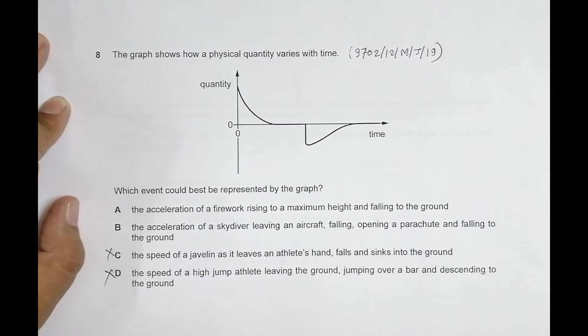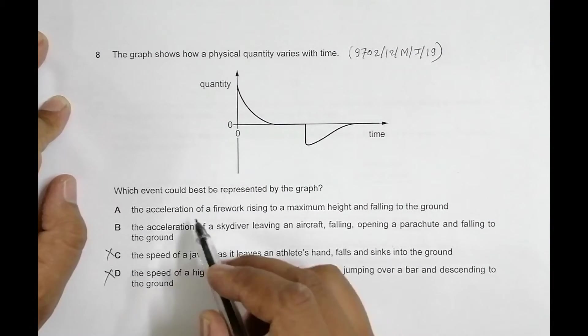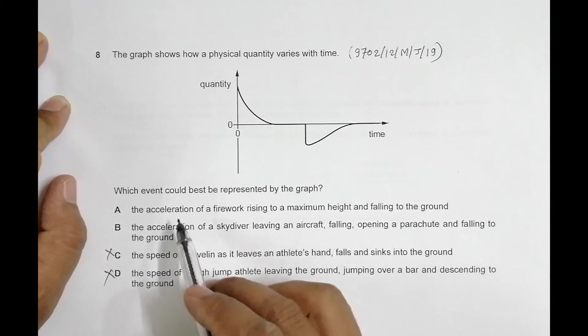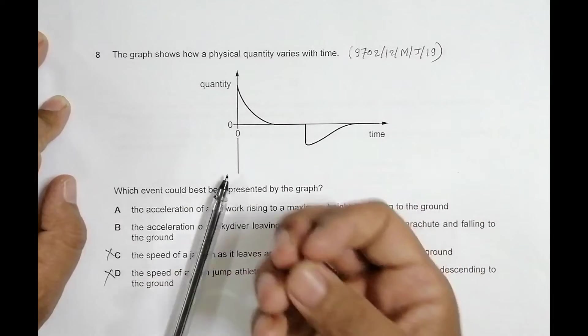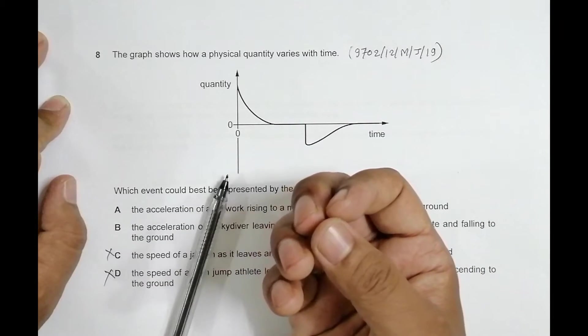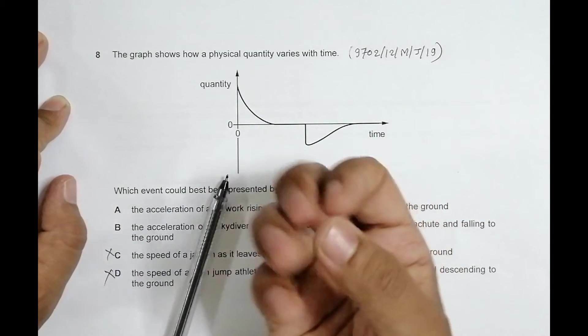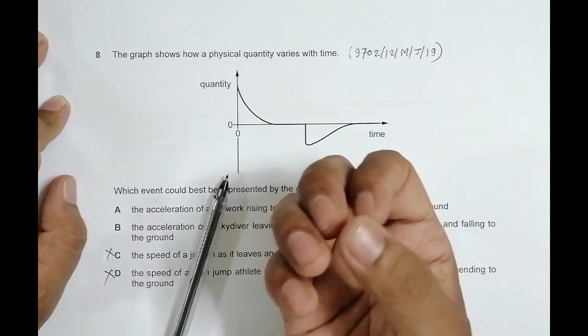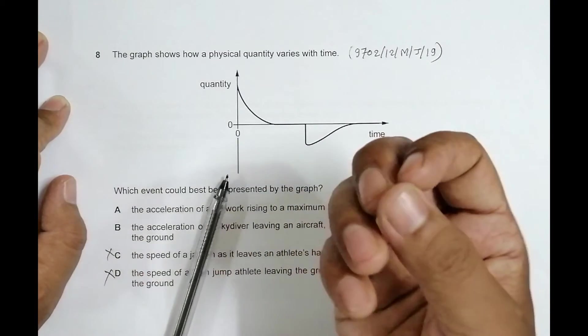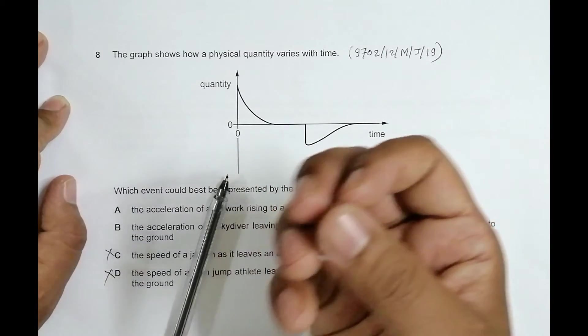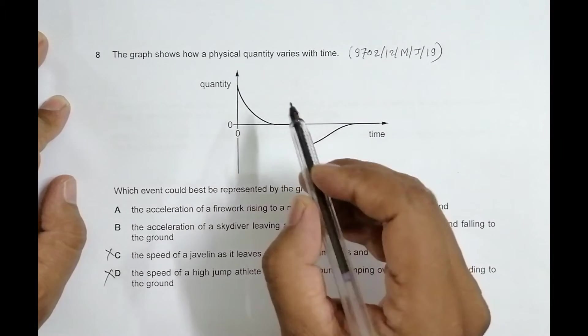In A, we have the acceleration of a firework. When a firework rises from the earth to maximum height, initially the velocity is high, velocity decreases, so that means the acceleration also decreases.